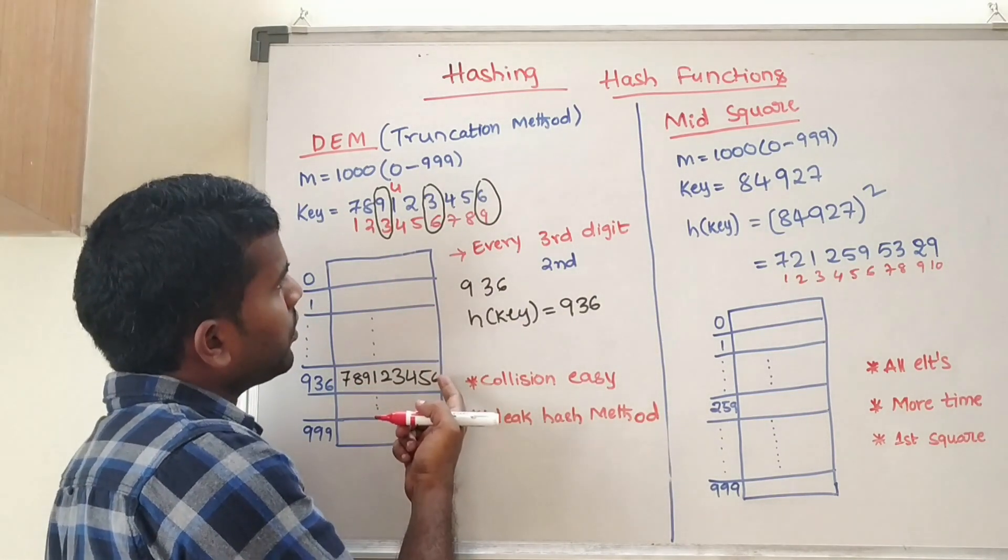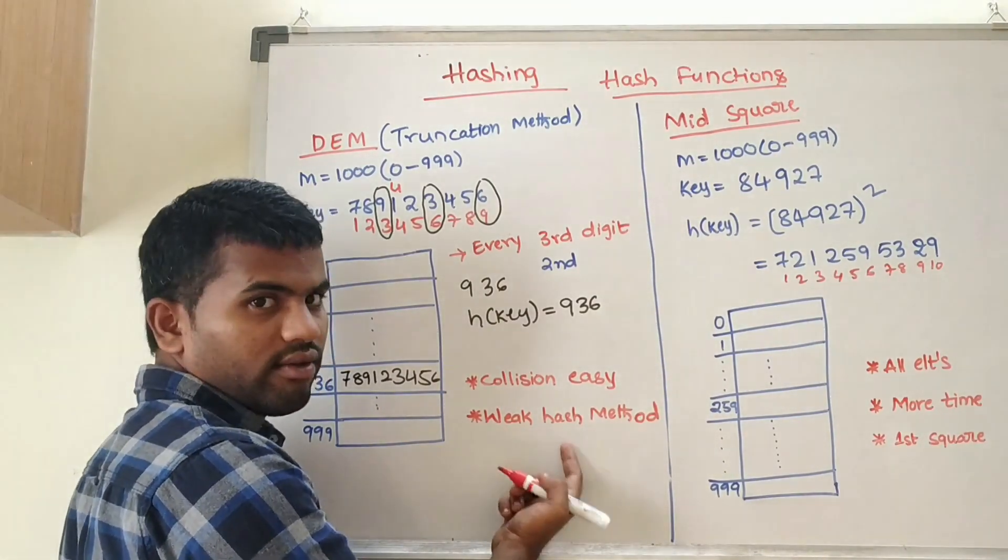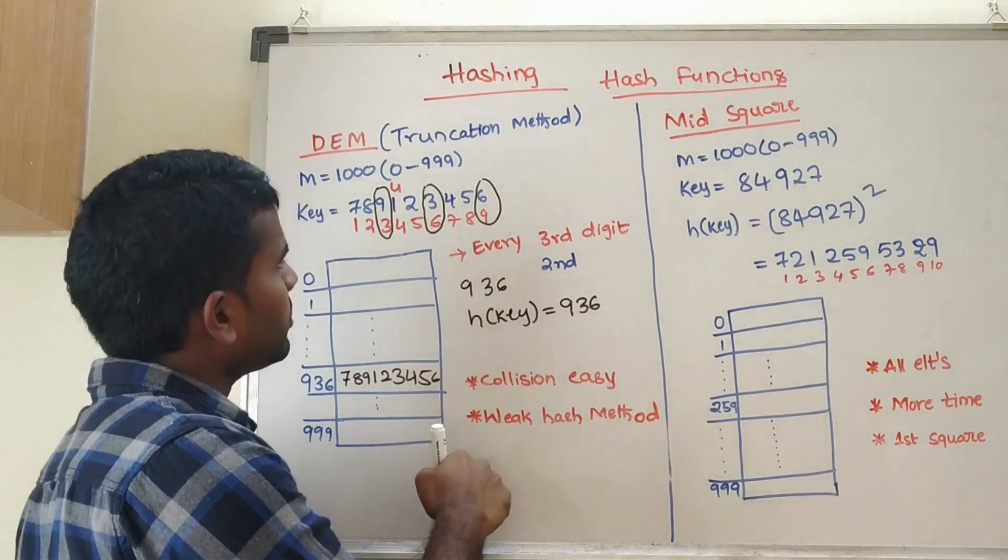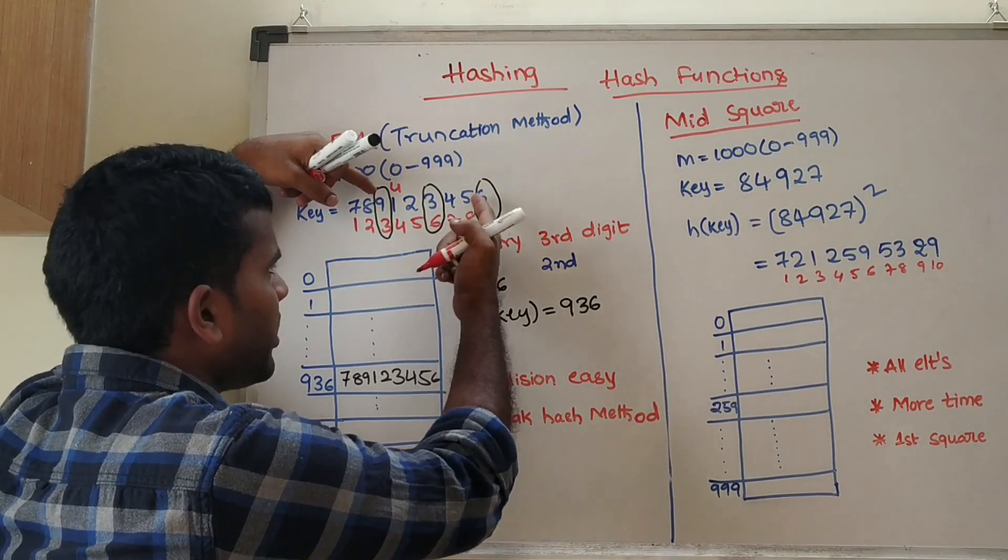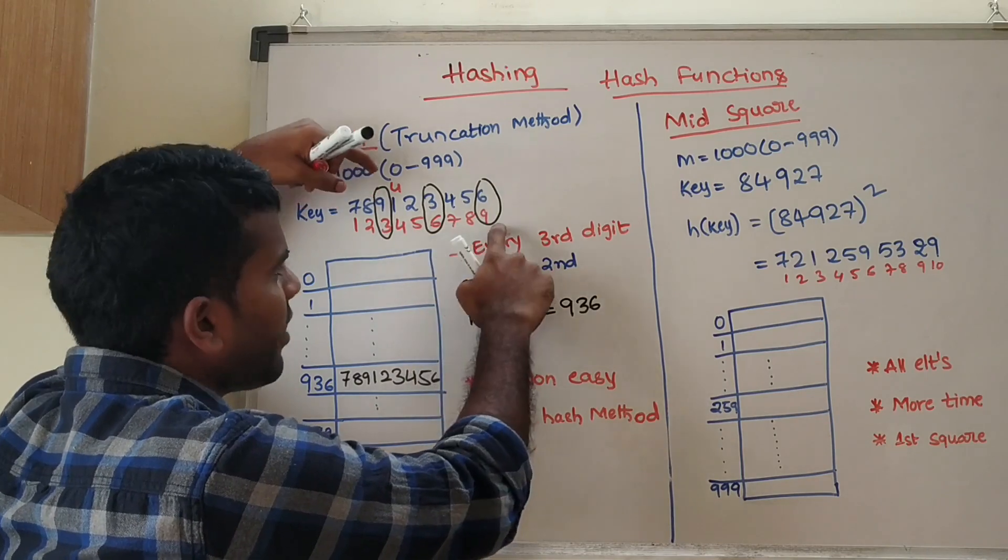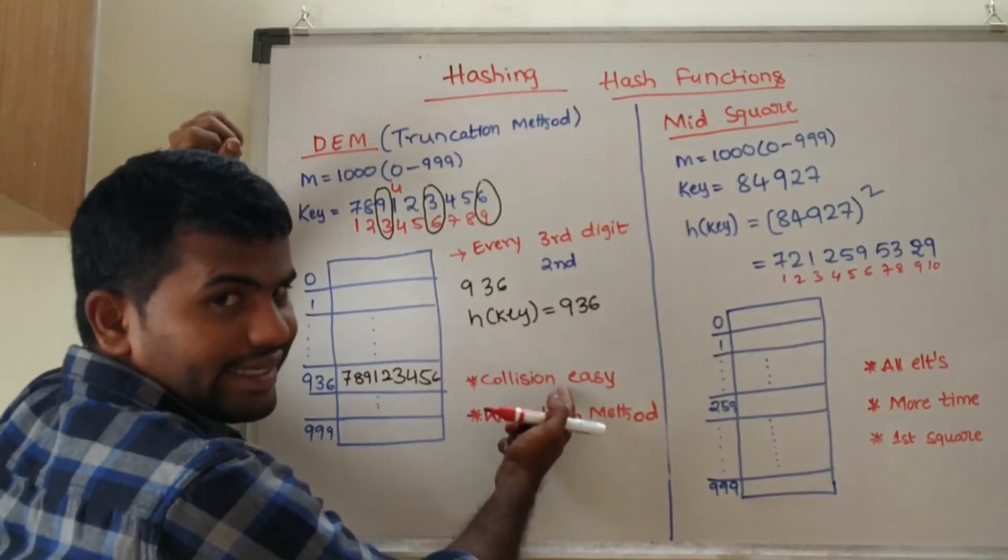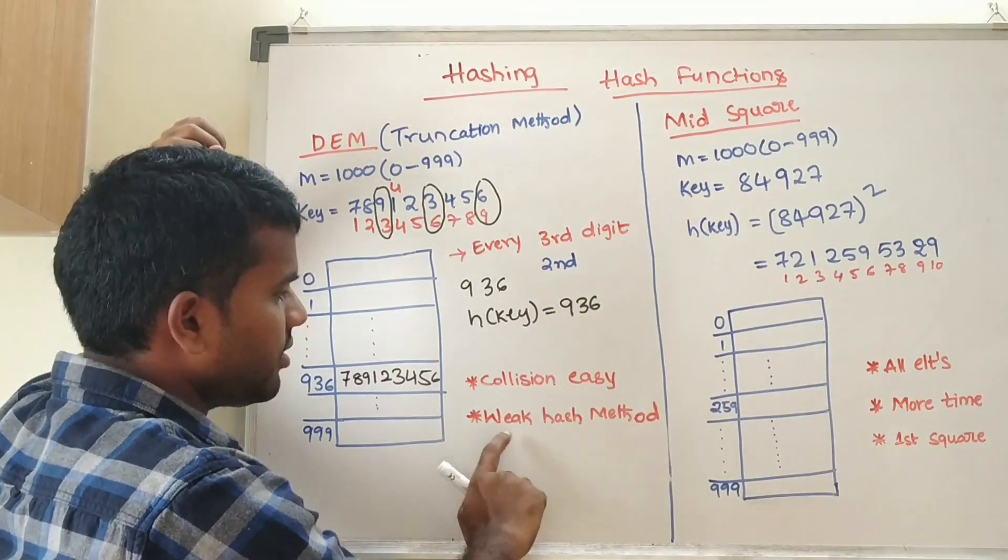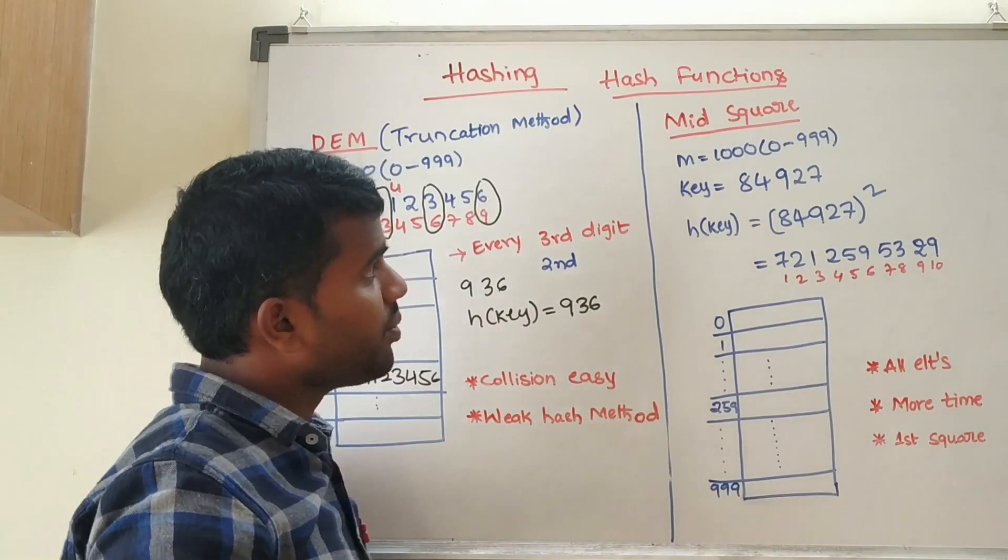So we can say that this hash method is very weak because except these three values, you can change any value and collision will happen easily. This method is a very weak hash method. Then we will see mid square method.